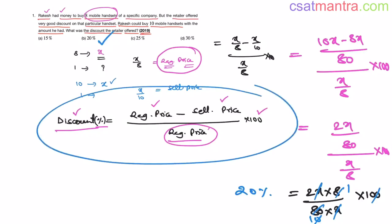This is the same result as the previous method — we just assumed X as 800. Choosing the simplest value comes with practice; if you have no idea, just take it as X. One important observation: the discount is not dependent on X — X cancelled out, which confirms that you can take any value and the discount remains the same. The key learning is that when dealing with percentages, not exact values, we can assume any cost — it has no effect on the final answer.